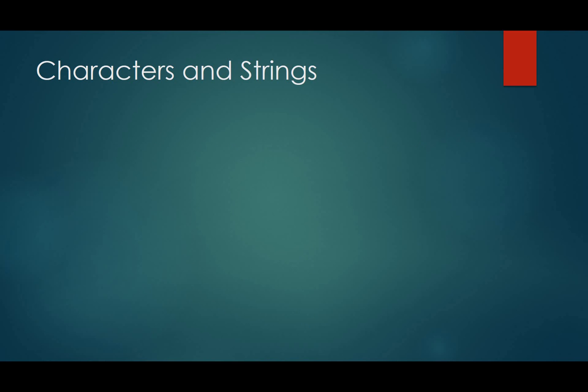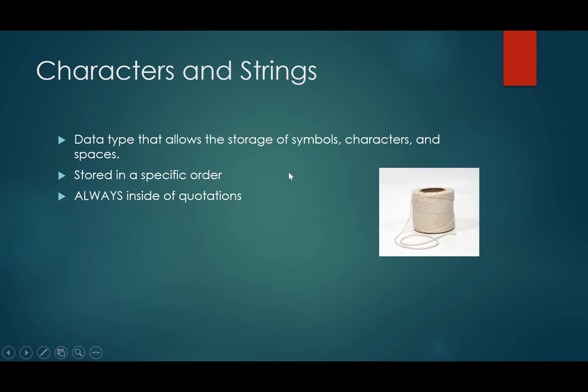So the next one is characters and strings. Now we have these because we don't always want to store numbers, right? Sometimes we want to store words or letters. So that's what a character and strings do. They allow us to store letters or words. Now, they're always stored in a specific order. That's why normally a string is called a string, because when you have a string, you have point A and point B on a string, and there is always something in between. It's in a specific order, kind of like a string. So one thing to note is they're always inside quotations, and they cannot be mathematically manipulated. So you can't mathematically manipulate the word blue. You can't times blue by red. You can't multiply words. The same thing with computers. If you store something as a character or a string, they are no longer mathematically manipulated.